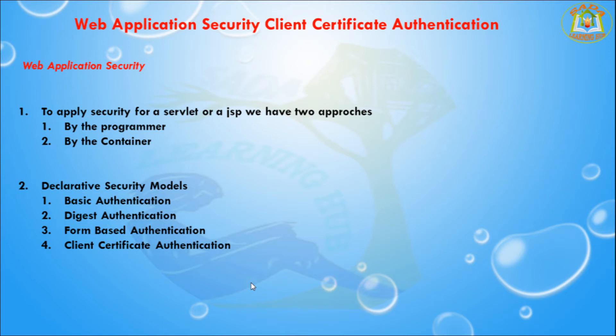Under login-config we configure which authentication we are using — basic, form-based, or client certificate — and mention it in the login-config tag. Providing security for the resources means applying authentication and authorization services. Authentication is nothing but verifying the username and password, and authorization is nothing but verifying the role. The set of roles with their usernames and passwords is collectively called a realm.